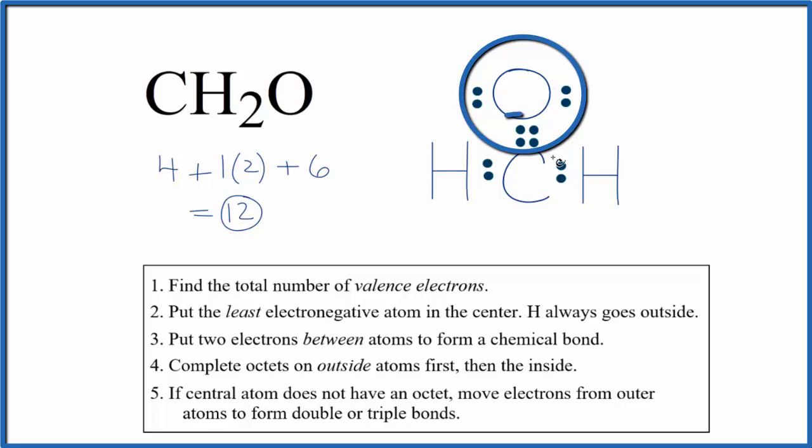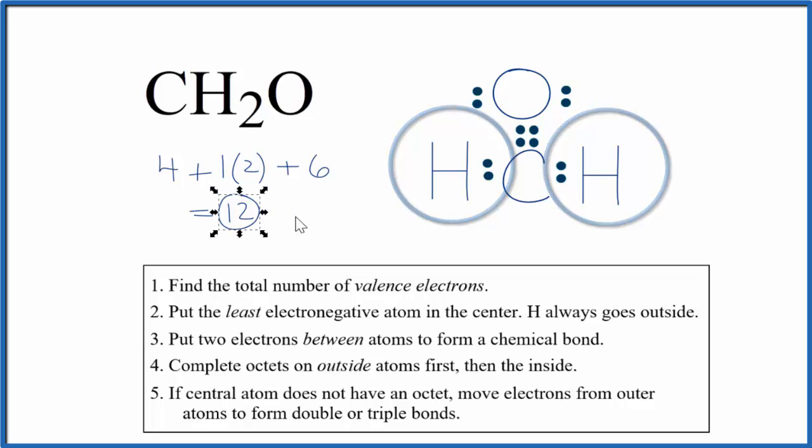Now the oxygen has eight. The carbon has eight. Each hydrogen has two. And we've only used twelve valence electrons.